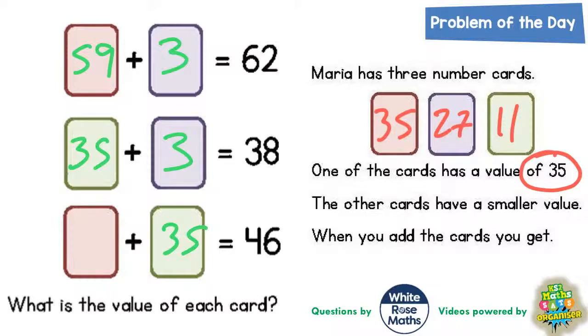But if you then make this red card 59, then that doesn't make sense, because 59 plus 35 is clearly going to be over 46. So that would be wrong. And again to make 35 up to 46 you would need 11.